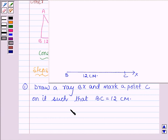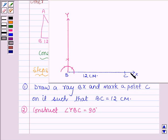Now our second step is to construct angle YBC equal to 90 degrees with the help of a D square or a protractor. So thus we have drawn angle YBC equal to 90 degrees.